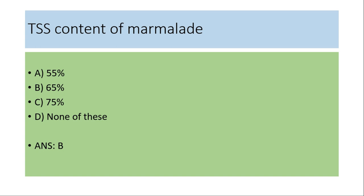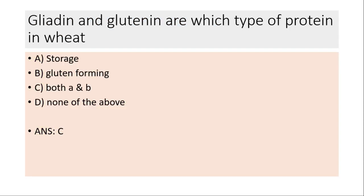We had discussed jam, jelly, and marmalade in a separate video — please watch that for more details regarding TSS content. Gliadin and glutamine are which type of protein in wheat? (a) Storage protein, (b) Gluten-forming, (c) Both A and B, (d) None of the above. The answer is (c) both A and B.